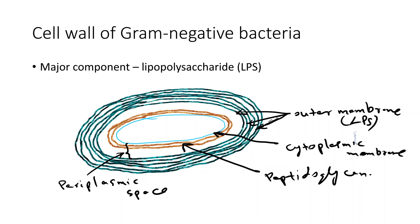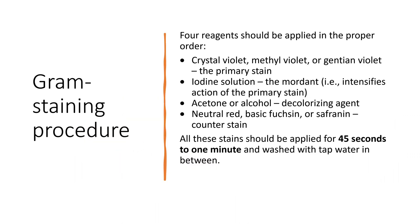So that is about the cell wall structure. Now we will talk about the gram stain procedure briefly. We apply four reagents in the proper order. First is the primary stain — crystal violet, methyl violet, or Jenssen violet — applied initially. Then the iodine solution, which is the mordant; it intensifies the color of the primary stain. Then we have acetone or alcohol, which is the decolorizing agent.